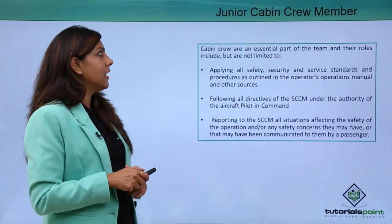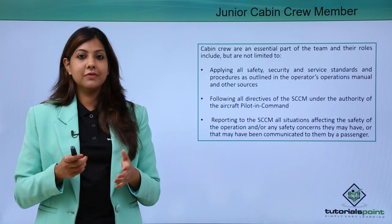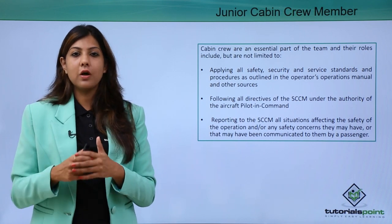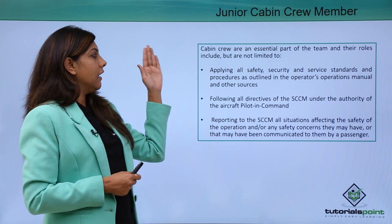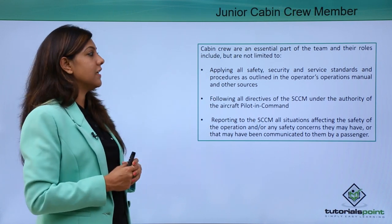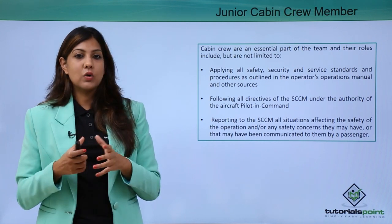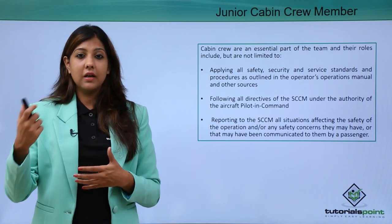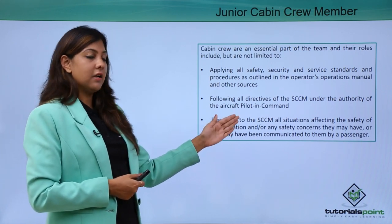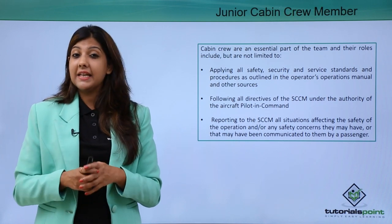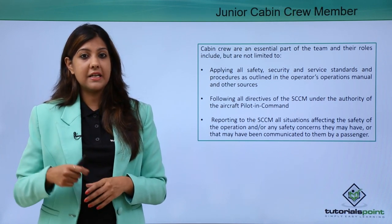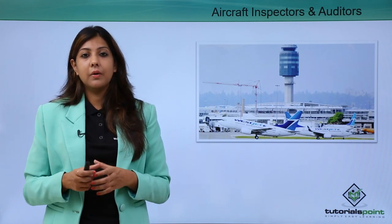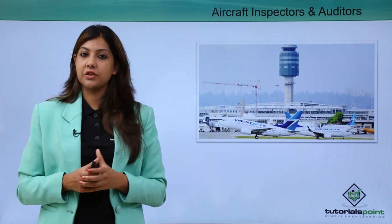Junior cabin crew come after the senior cabin crew. They are people with fewer years of flying experience and less developed leadership qualities. Their duties include applying all safety, security, and service-related procedures and standards as outlined in the operations manual. They must follow all commands of the senior cabin crew member as well as the pilot. They also report to the senior cabin crew member all situations affecting the safety of the aircraft, as well as any feedback or issues raised by passengers.